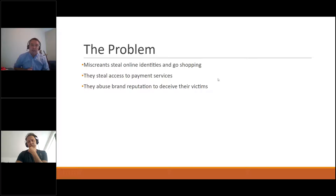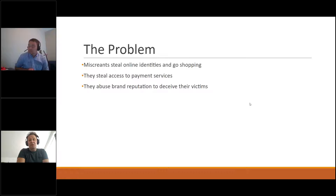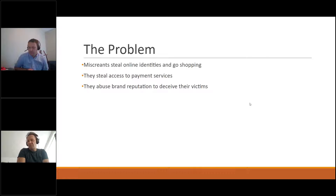They can use that information to get into your account, empty your bank account, steal, or order services or goods in your name and send them somewhere else. It doesn't have to be large grocery platforms — it could be a service provider relationship. Think of your company as a service provider: somebody writes an email impersonating you to one of your customers asking them to submit their identity. People will very likely react and enter the data because they think the message is coming from you.